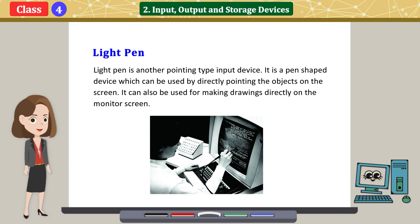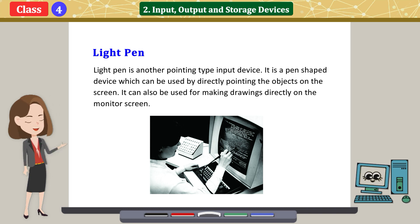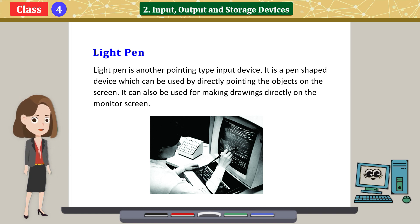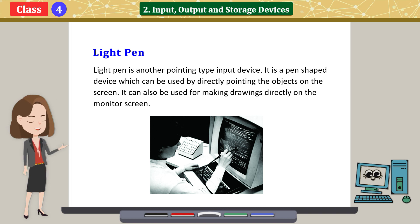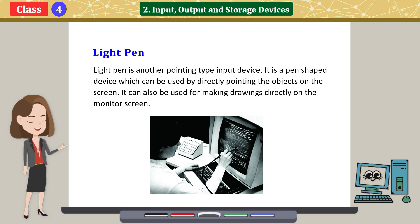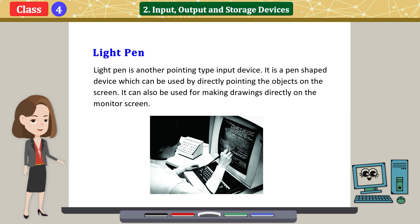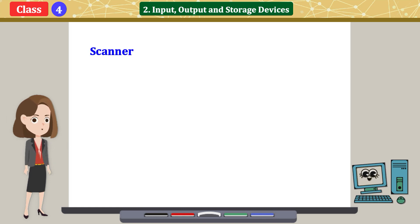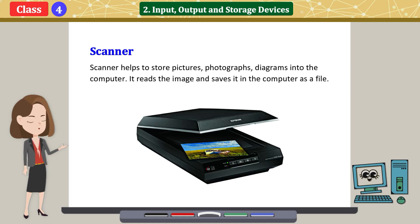Light pen is another pointing-type input device. It is a pen-shaped device which can be used by directly pointing at objects on the screen. It can also be used for making drawings directly on the monitor screen.